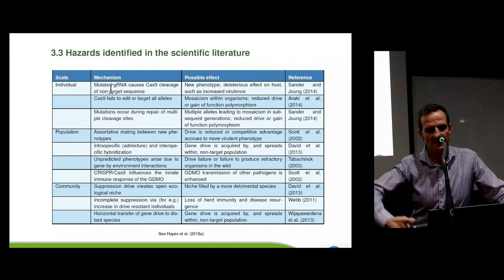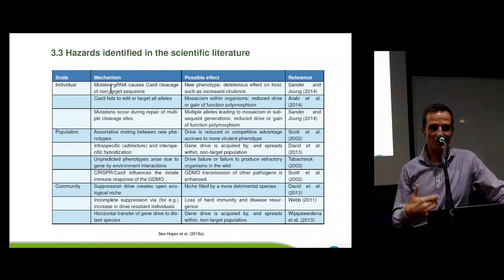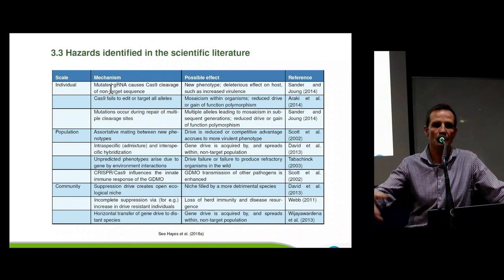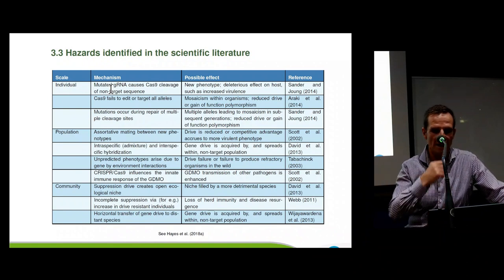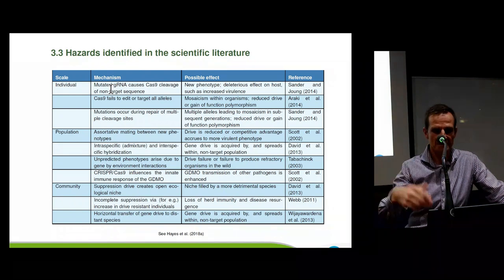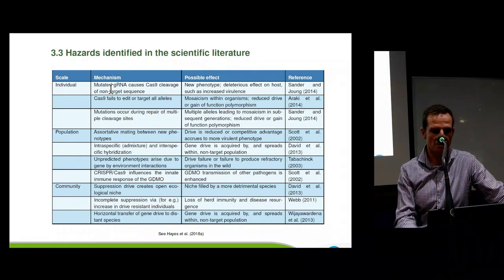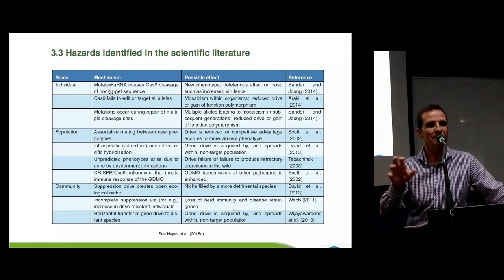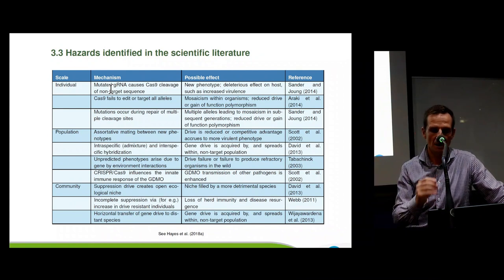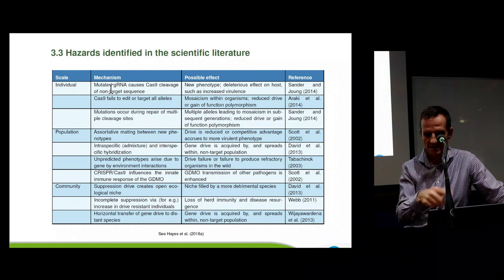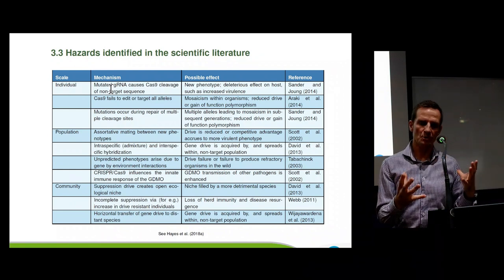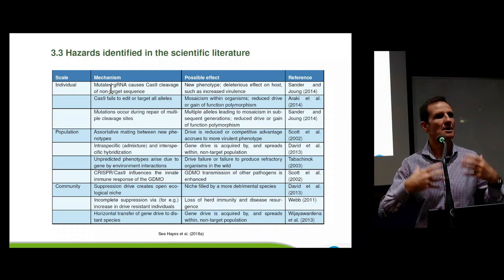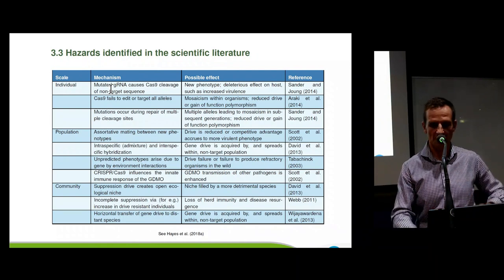Looking through the scientific literature, you see quite similar concerns being expressed by scientists about things that might go wrong with this technology. This whole process of figuring out what might go wrong is called hazard identification — the first stage of risk assessment. Risk assessment as a discipline usually looks back in time: it looks at failure rates to work out how often something will go wrong and what the impact will be. But with new technology, we have no operating experience, so we can't use those retrospective techniques.